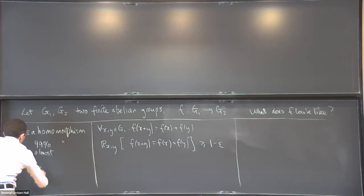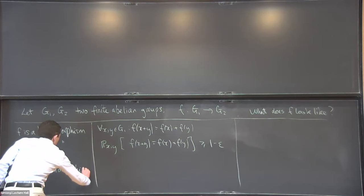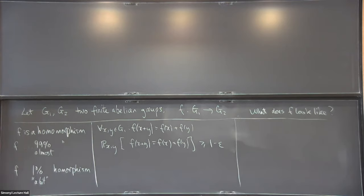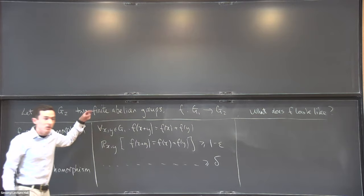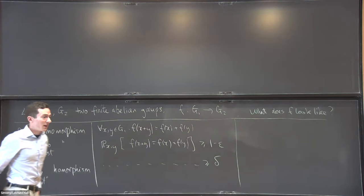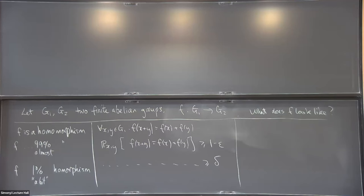Similarly, I could say f is a 1% homomorphism if the probability that f(x+y) equals f(x) plus f(y) is at least 1% of pairs x and y. In computer science lingo, the first case — 99% — is called the unique decoding regime, and the 1% case is the list decoding regime. In the first case the true homomorphism would be unique, but not in the second — that's why the names are different.